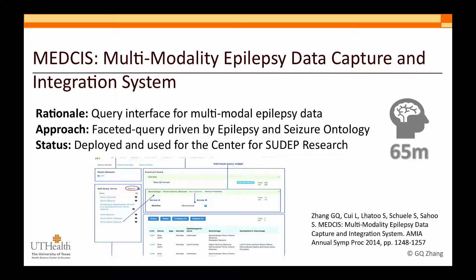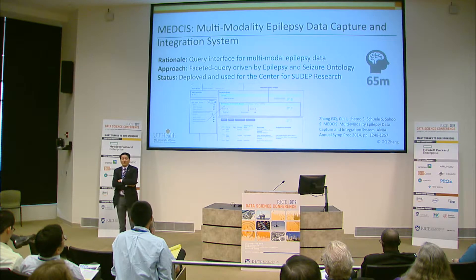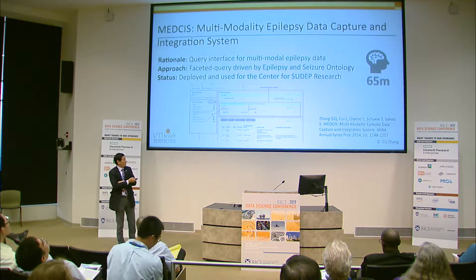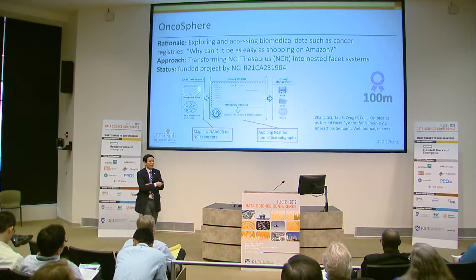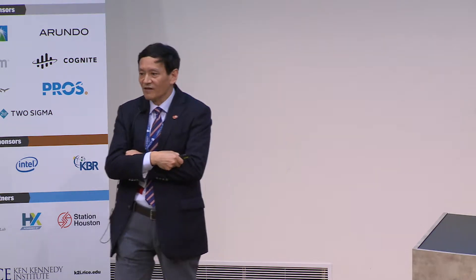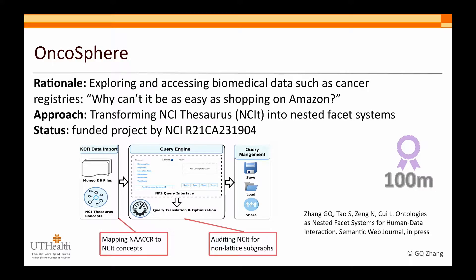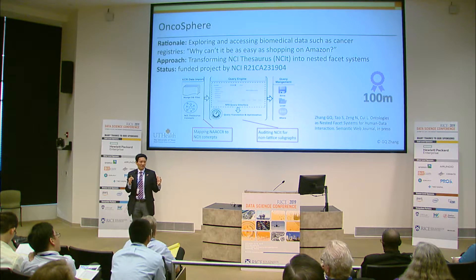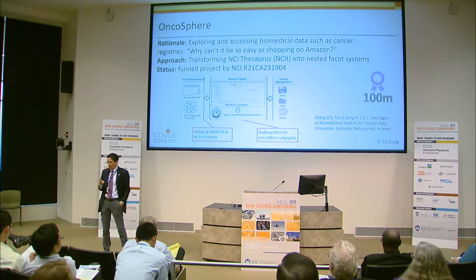We also have a core query interface for epilepsy data. Once we collect multi-modality data from epilepsy patients, we need to query and explore that data, create cases and controls, and perform research and analysis. Another interface we're developing provides better access to cancer registry data by converting NCI Thesaurus — a terminology system dedicated to cancer — into a navigable interface so users can interact with familiar concepts and drill down to the sub-population of interest.